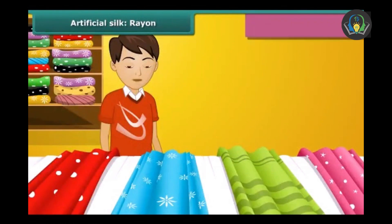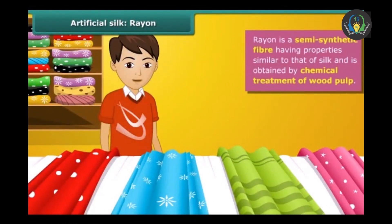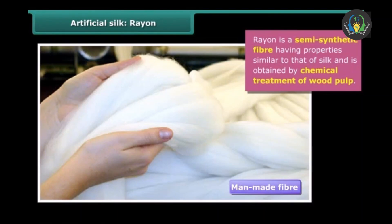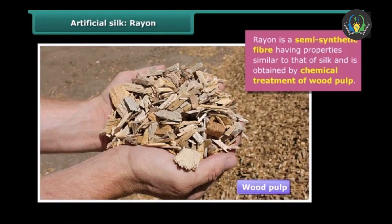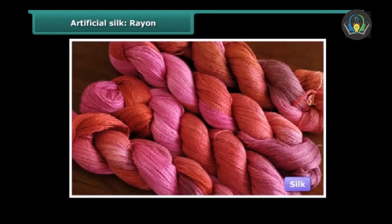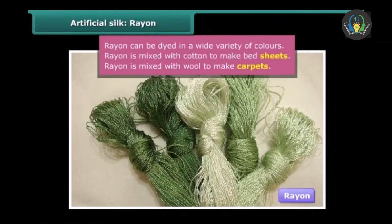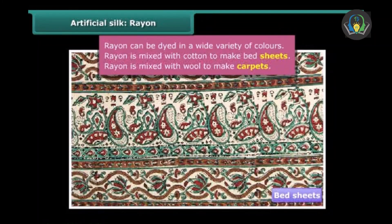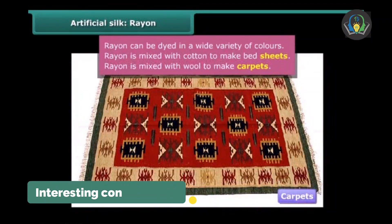Let's see the very first fiber, which is rayon. Rayon is a semi-synthetic fiber having properties that are similar to silk. Rayon is obtained by chemical treatment of wood pulp. Since it is man-made and wood pulp is used, it is known as a semi-synthetic fiber. It looks exactly like silk. Rayon can be dyed in a variety of colors. Rayon is mixed with cotton to make bedsheets, and it is mixed with wool to make carpets.